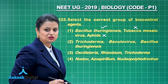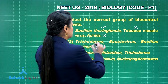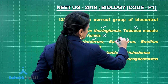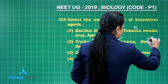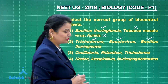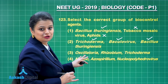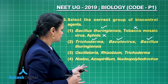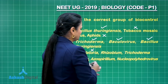Baculovirus is also used as a biocontrol agent. Bacillus thuringiensis is also related to it. Oscillatoria is involved in nitrogen fixation, so it is out of the scenario.